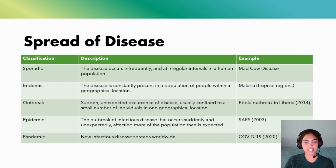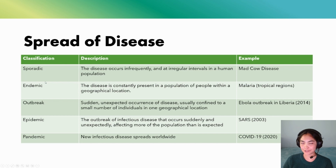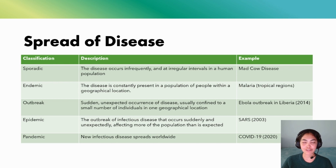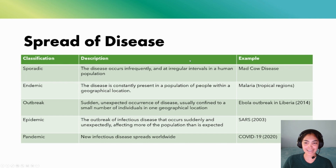We can classify the spread of disease into five different categories. The first one is sporadic, where the disease occurs infrequently at irregular intervals. A good example of this is the mad cow disease mentioned in one of the previous videos.